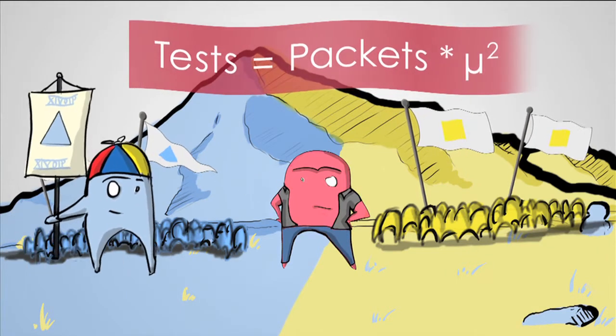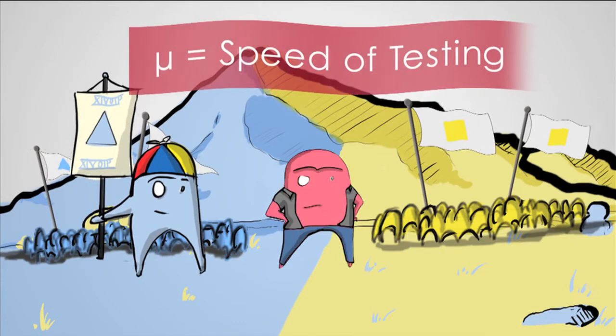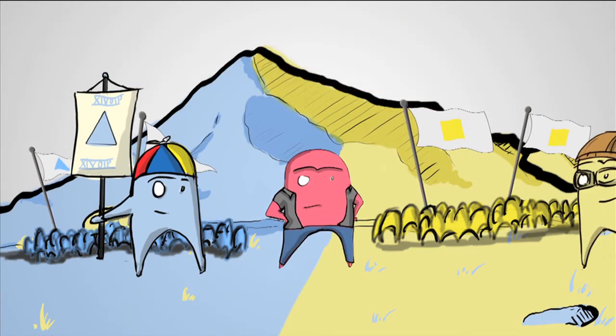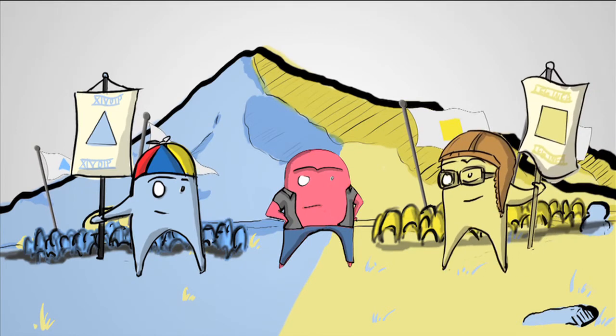Tests are equal to packets times mu squared. Mu is equal to the speed of testing. If you can convert packets to tests and vice versa, we will have peace.